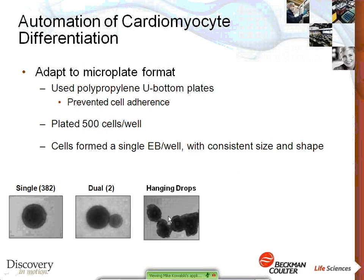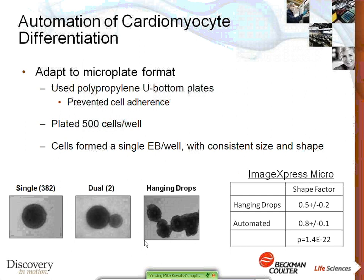We plated 500 cells per well and found that this cell number gave us a single embryoid body per well with very consistent size and shape. Out of a typical 384-well plate, we got about 382 single EBs and just roughly two wells with multiple EBs — a very consistent process. By comparison, batch-cultured hanging drops produced much rougher embryoid bodies, forming chains and likely higher variability. We used the ImageExpress Micro from Molecular Devices to assess shape factor for consistency of embryoid body formation.